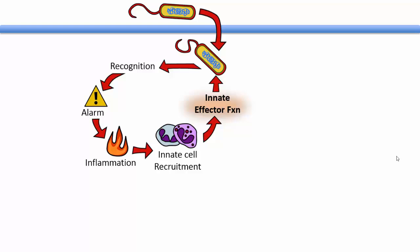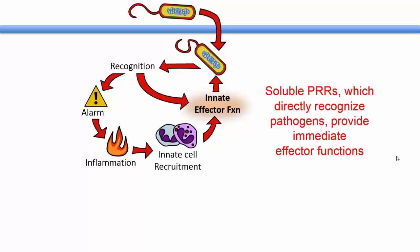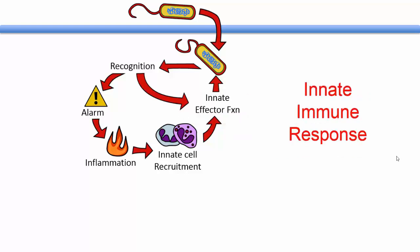At the same time, soluble pattern recognition receptors exert immediate effector functions to directly attack pathogens. Together, these steps form a map of a typical innate immune response. In some cases, this response by itself is sufficient to eliminate pathogens. In other cases, it will keep you alive until your body has a chance to develop an adaptive immune response, which we will cover in the next talk.